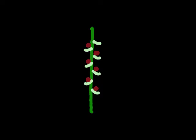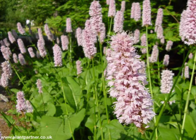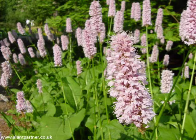This first inflorescence is called a spike because the flowers are directly born on the peduncle — so there's no extra flower stalks. A good example of a spike is the Persicaria bistorta 'Superba', where the flowers are directly on the peduncle.